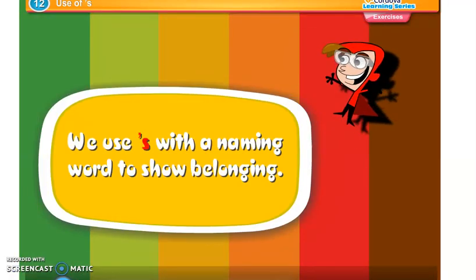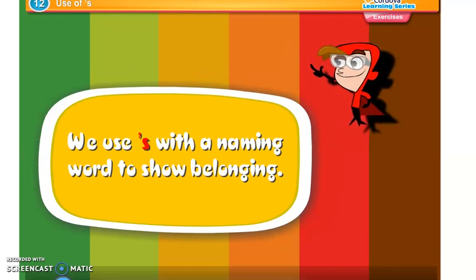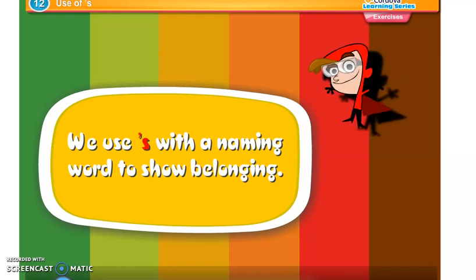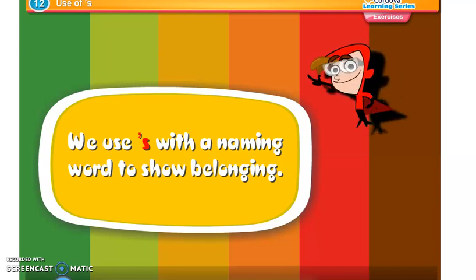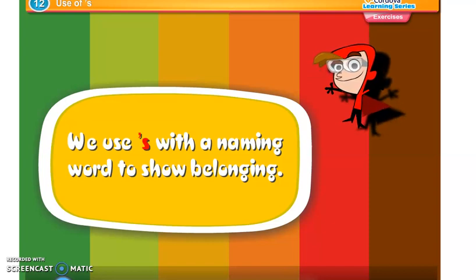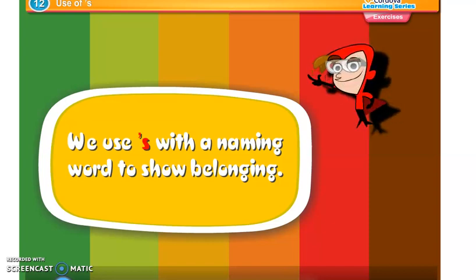We use apostrophe S with a naming word to show belonging. Did you understand, students? How we have to add S? We have to add apostrophe S when the thing belongs to some naming person. Understood?